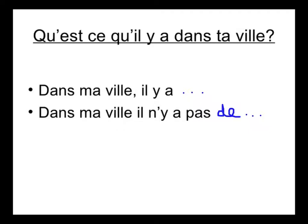For example, dans ma ville il y a un château — in my town there is a castle. And the second sentence, dans ma ville il n'y a pas de — we use this one to say when there isn't something. For example, dans ma ville il n'y a pas de château — in my town there is no castle.